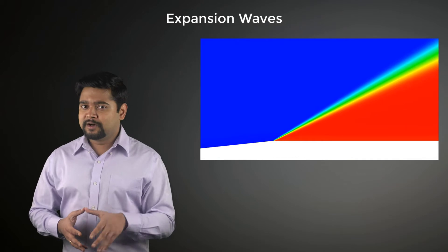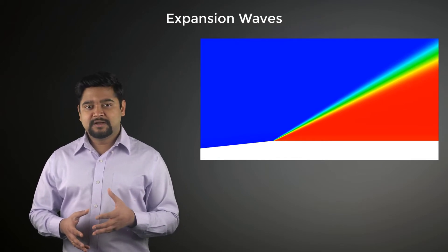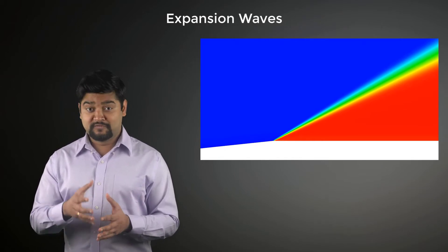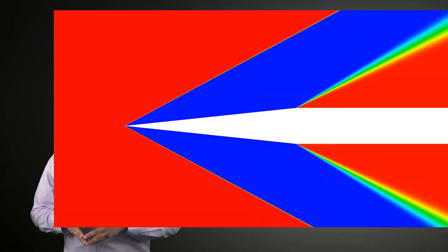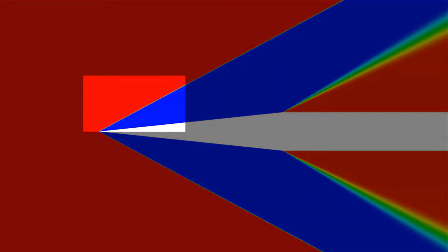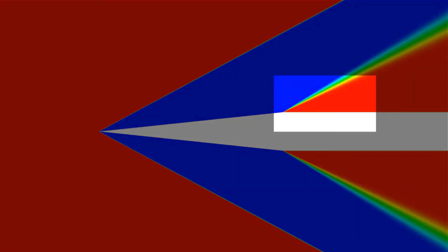So if you think about it, expansion waves are basically the opposite of oblique shocks. Let's look at the contour plot again. Do you see anything strikingly different between the oblique shock and the expansion wave? Did you notice that unlike a shock, expansion region is continuous and the properties vary relatively smoothly and continuously, but without any abrupt changes?